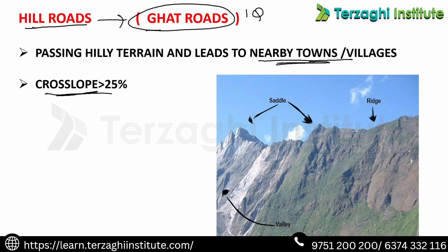Hill roads are at the top peak point, that is the ridges. Saddle is the region between two ridges — that is the saddle point. Valley is the V-shaped space between two mountains. These are the basic geographic features of hill roads.